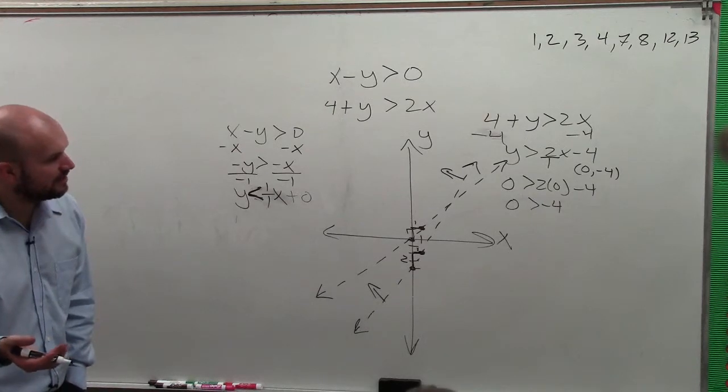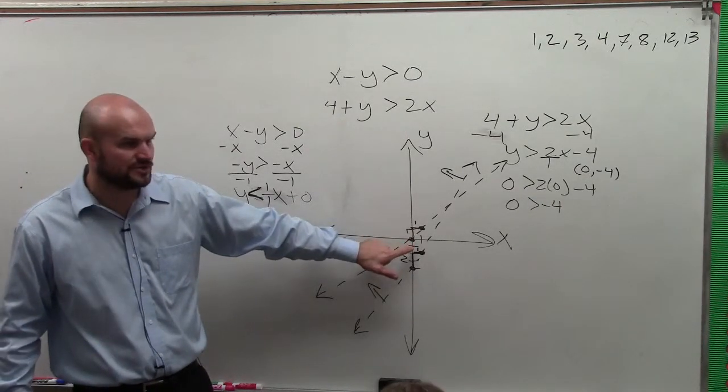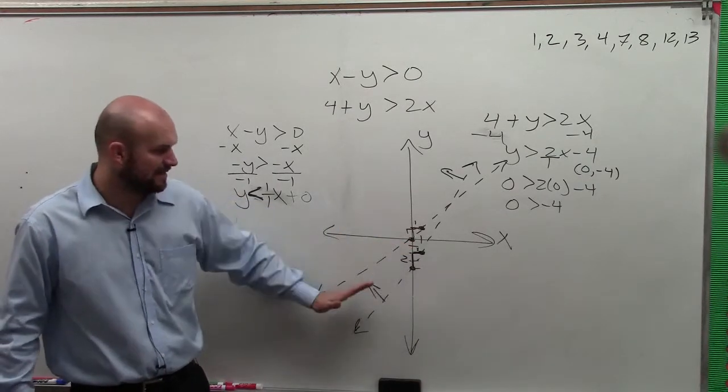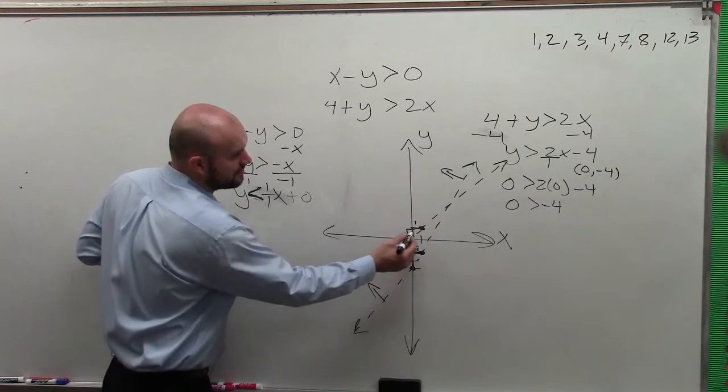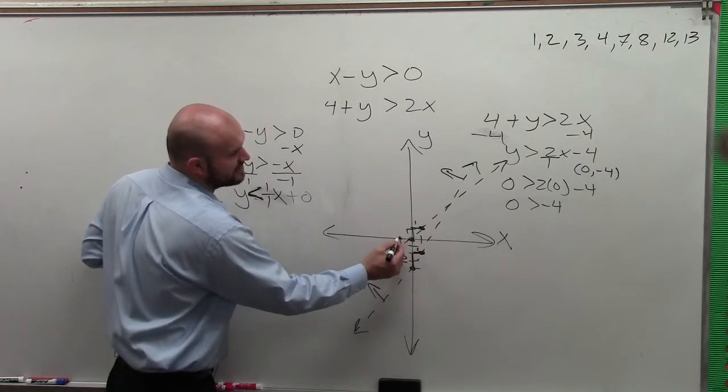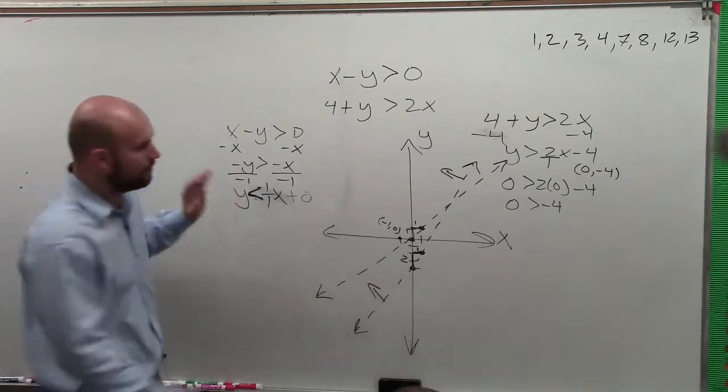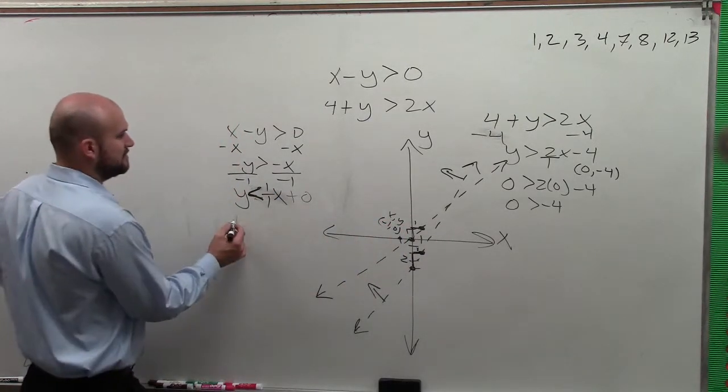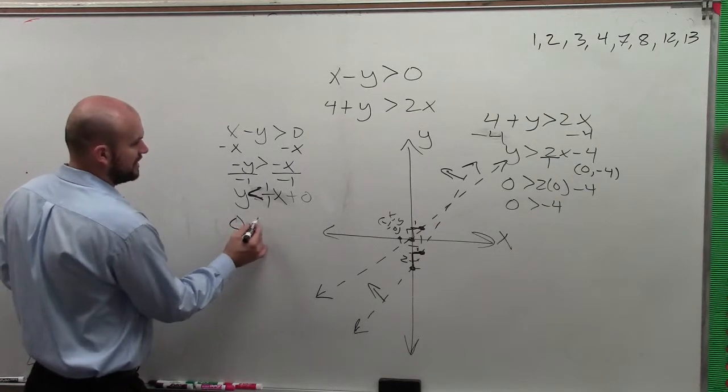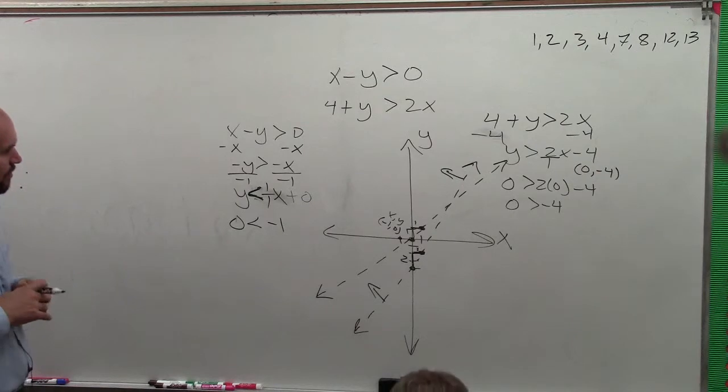Now the problem we have here is I can't use the same test point, 0, 0, right? Because the line is on my test, or my line is on that test point. So let's use the point negative 1, 0. So x is negative 1, y is 0. And you can use any point, really, that you want to.